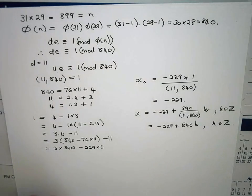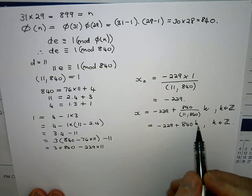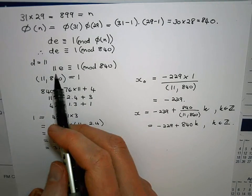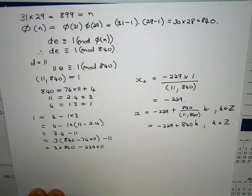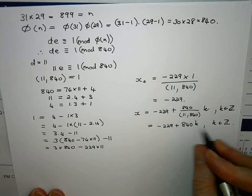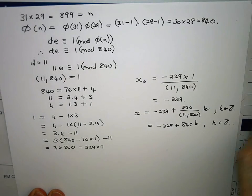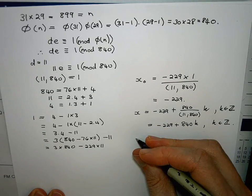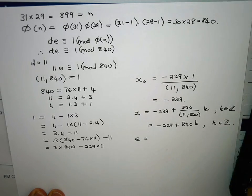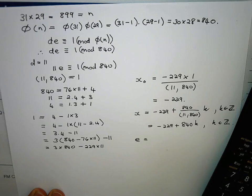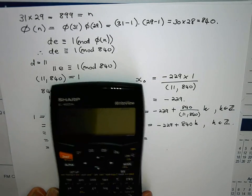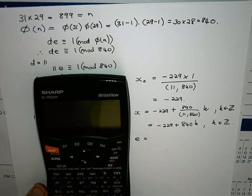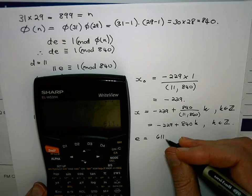So I want to use this to get a value for e which is between 0 and strictly less than 840. So I'm going to take k to be 1, so I'm going to take my e to be minus 229 plus 1 times 840 which gives me 611.